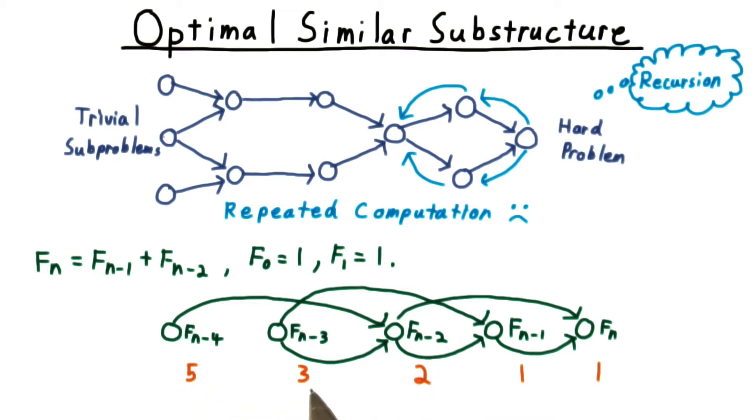Notice that each number here is the sum of the two numbers to the right, so this actually is the Fibonacci sequence. And the number of times that the n minus kth number is computed will be equal to the kth Fibonacci number, which is roughly the golden ratio raised to the kth power. So yikes, this recursive strategy is exponential.